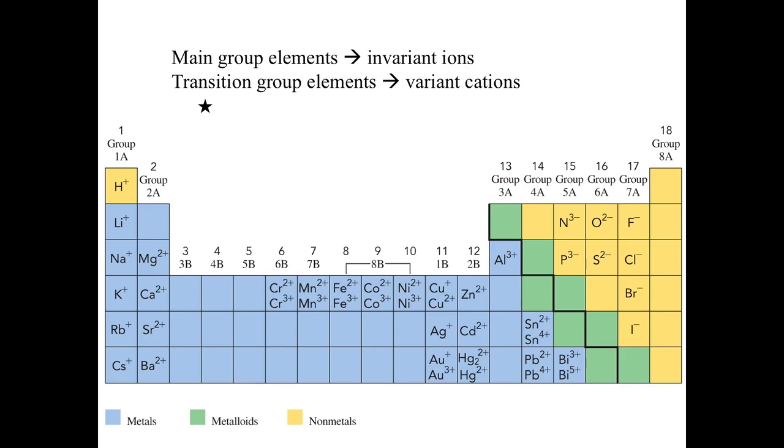As opposed to when you are a transition element, when you become a cation, you will have various charges. Some example given here, chromium, you can be 2 plus or 3 plus. Manganese, you can be 2 or 3 plus. Iron, you can be 2 or 3 plus. So on and so forth. It turns out there are also exceptions that you should memorize.